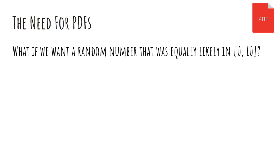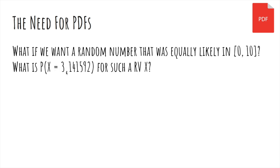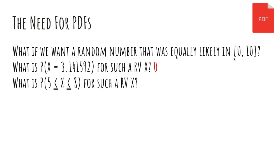Why do we need continuous random variables? Suppose we wanted a random number that was equally likely to be any number in the interval 0 to 10. What is the probability that x is exactly equal to some number? It's actually 0, because there are uncountably many numbers in this interval. What about the probability that x is between 5 and 8? That would be 3 tenths — the size of that interval over the total.